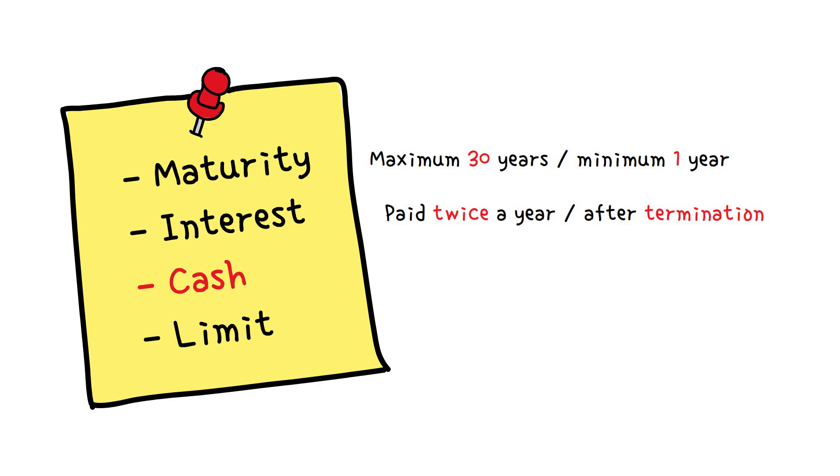You can cash in your I bond before 30 years. If you cash in the bond in less than 5 years, you lose the last 3 months of interest. For example, if you cash in the bond after 12 months, you get the first 9 months of interest.